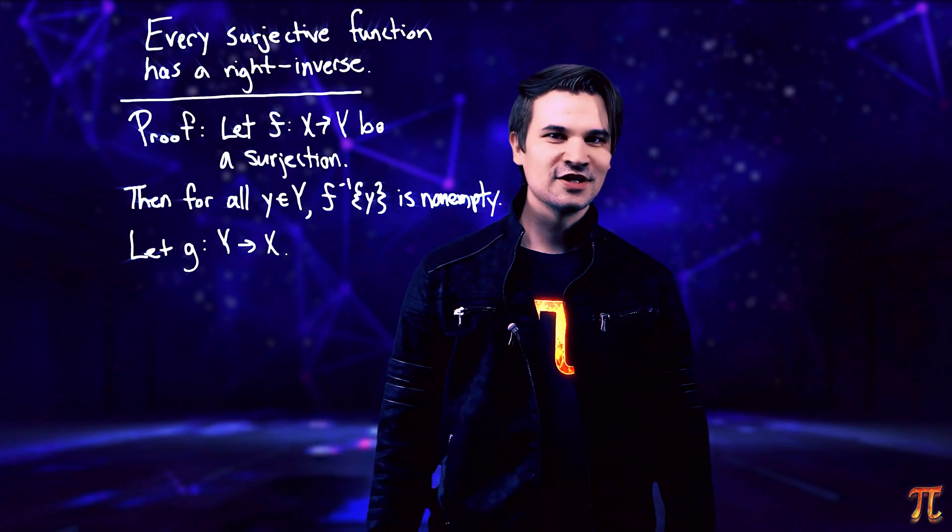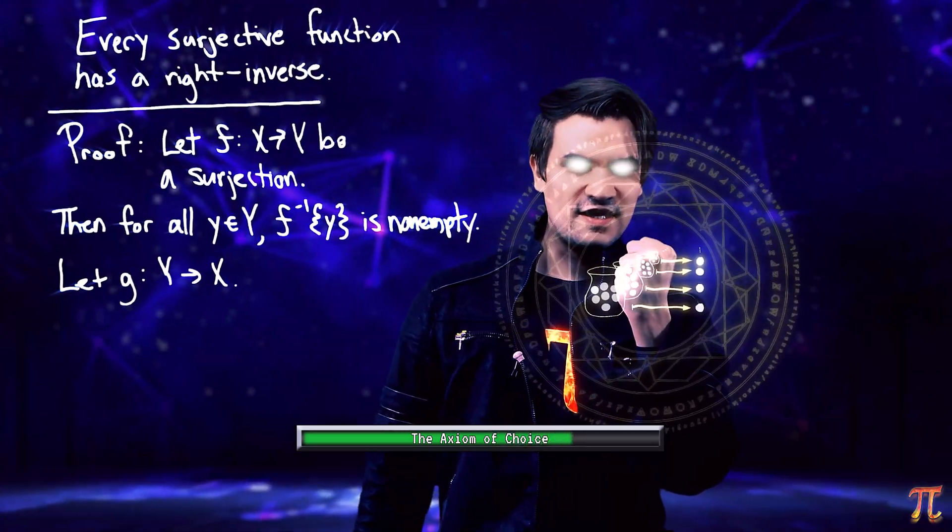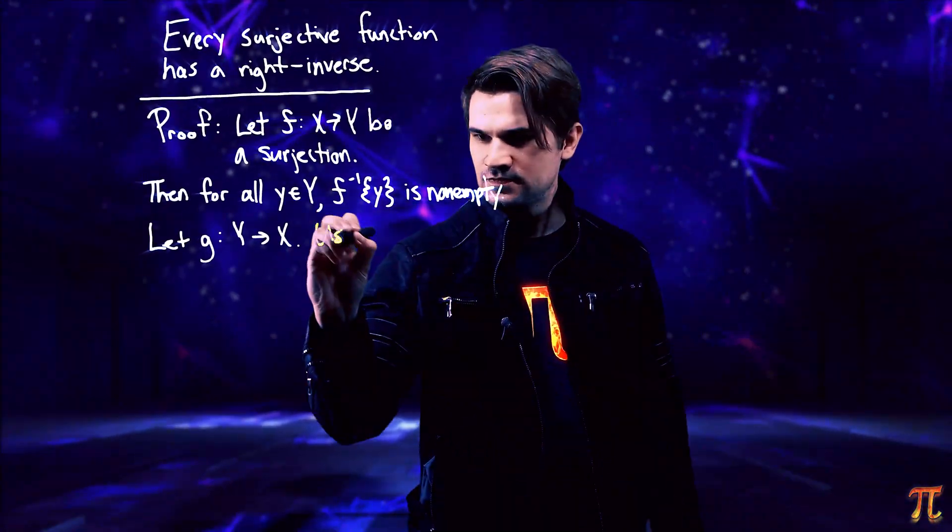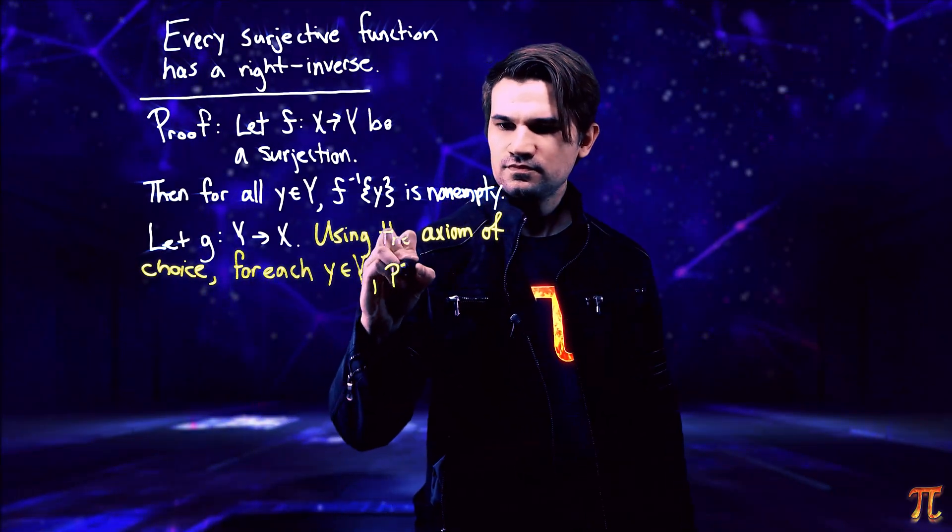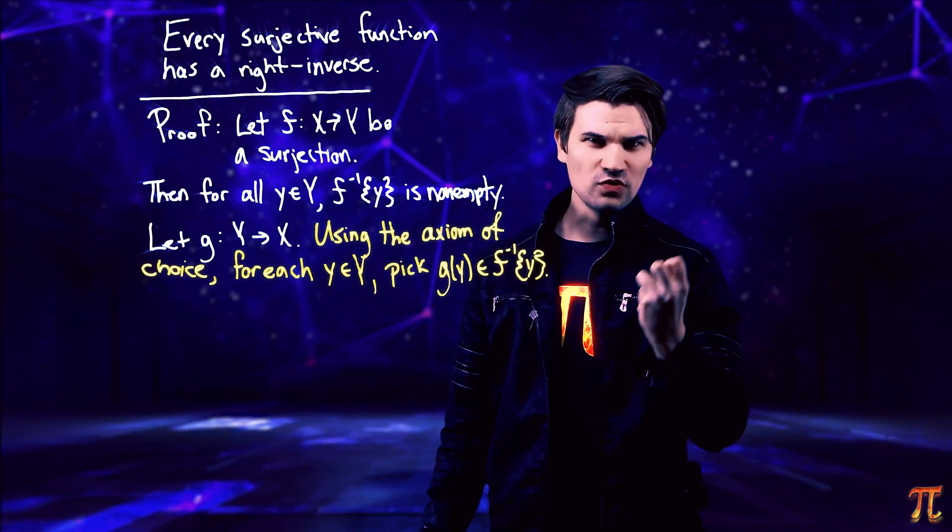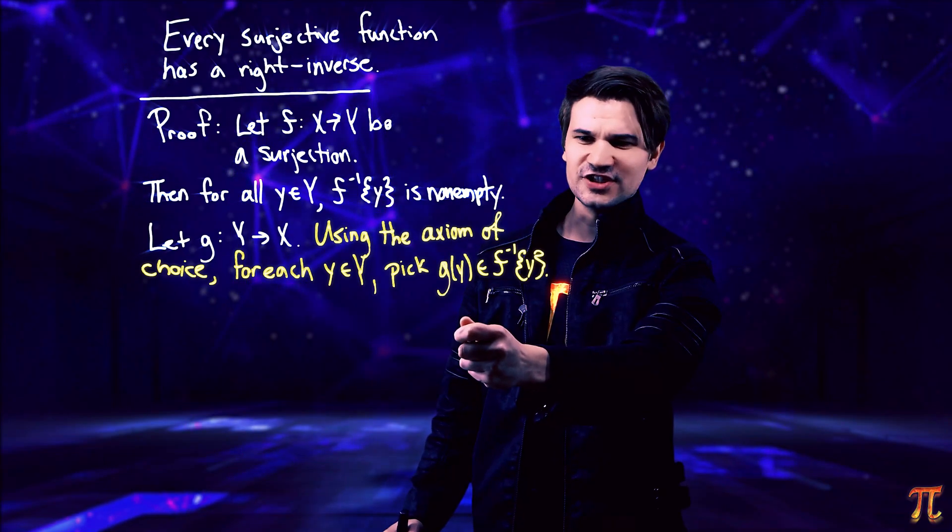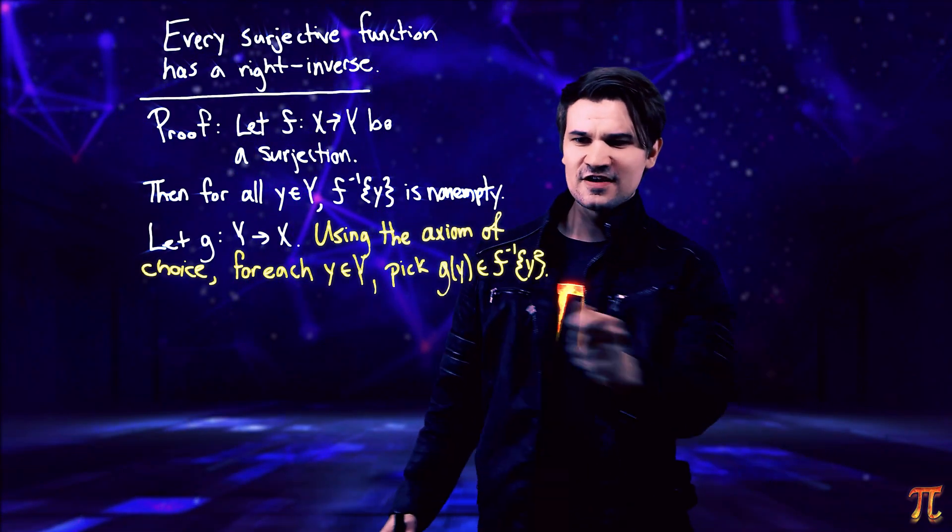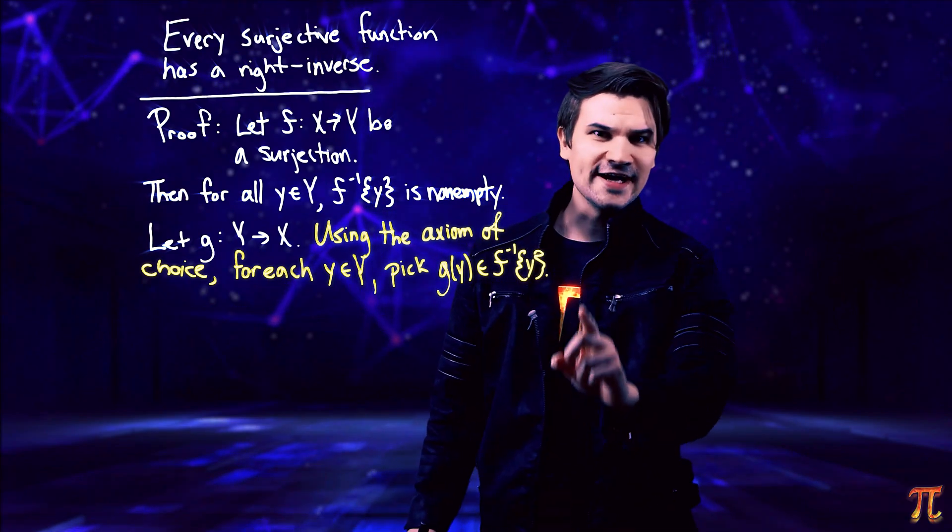Now, here comes the part where we invoke the axiom of choice to reach into the stars and claim our prize. Now, g exists only through the axiom of choice. I didn't give a deterministic definition of what g is doing. I just said that for any y, g of y lands in the preimage of y under f.